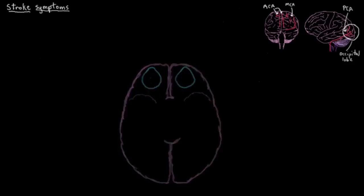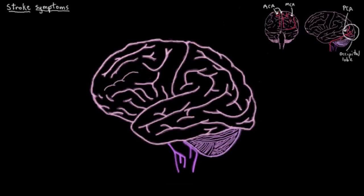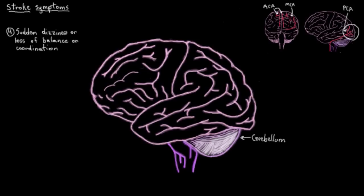Alright, what's next? Another common set of symptoms are ones to do with balance. So you get this sudden feeling of dizziness or loss of balance or coordination. So you might have trouble, say, walking. And this can happen if you have a stroke in your cerebellum. So a substantial enough blockage in at least one of the three main arteries that supply it with blood. And why would this result in dizziness or loss of balance?